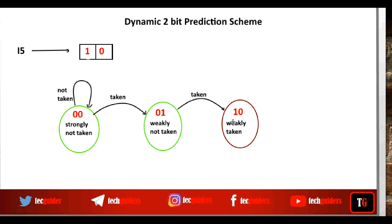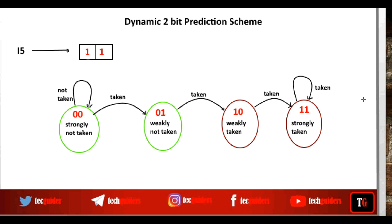Now we are in the weak state predicting that the branch will be taken. If our prediction is found to be correct — actually if the branch is taken — then we move to the strong state representing the prediction that the branch will be taken. And as long as our prediction is correct, we remain in the same strong state predicting that the branch will be taken.